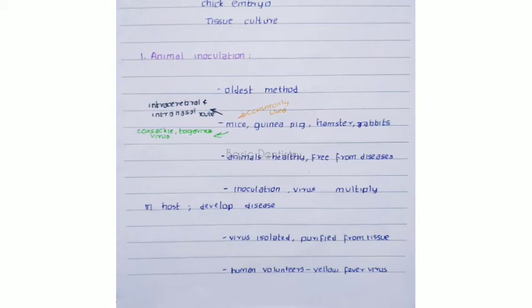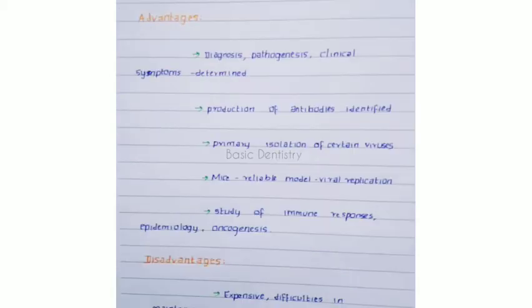The animals should be healthy and free from communicable diseases. After inoculation, the virus multiplies in the host and then develops the disease. Either the animal dies or, at the advanced stage of the disease, the virus is isolated and purified from the tissue. Live inoculation is also done for human volunteers, first done for yellow fever virus cultivation.